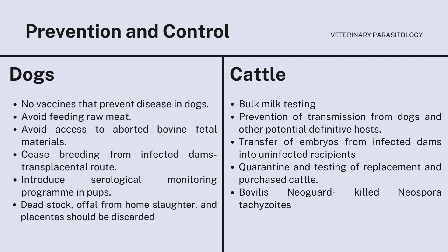For prevention and control of neosporosis in dogs, there is no vaccine that prevents this disease. You need to avoid feeding your dogs raw meat and avoid access to aborted bovine fetal materials. Cease breeding from infected dams via the transplacental route. Introduce a serological monitoring program in pups. Dead stock, offal from home slaughter, and placentas should be discarded in a manner that prevents ingestion by dogs, to reduce the risk that dogs will become infected and shed neosporosis on the farm.